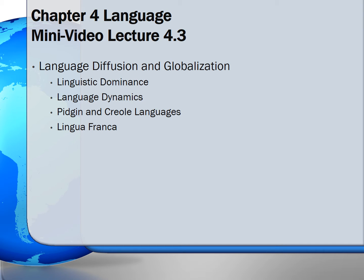When studying language spread, linguistic geographers also consider the context in which language is used. For example, in a given place, one language may be used at home, another in school, and still another in business. Being aware of the different uses of languages and the spaces or settings in which they are spoken helps us understand how languages become dominant.